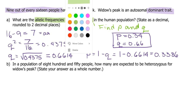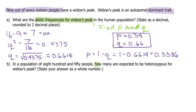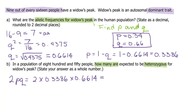In a population of 850 people, how many are heterozygous for widow's peak? So we're looking for 2pq. Make sure we use the unrounded numbers: 2 times 0.3386 times 0.6614. The answer to that is 0.4779. And because they asked how many, we'll multiply that by the total number in the population, which is 850, for a final answer of 381 people.